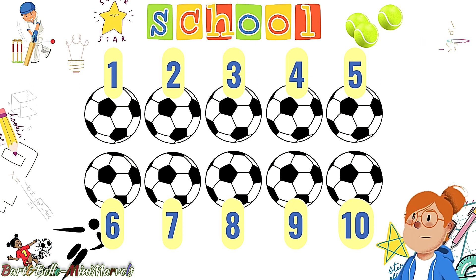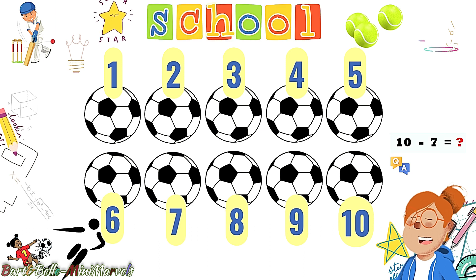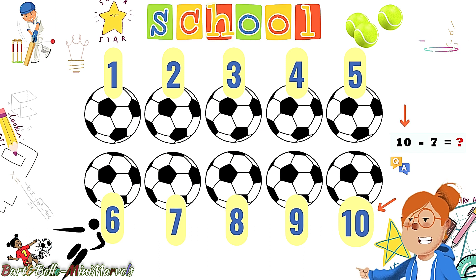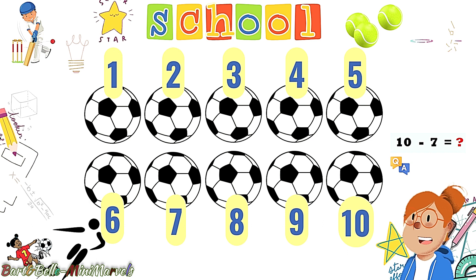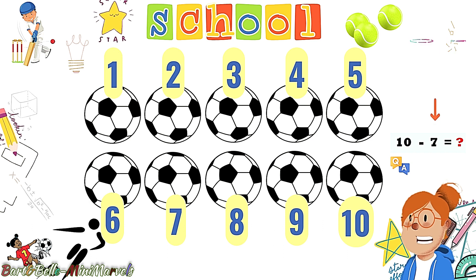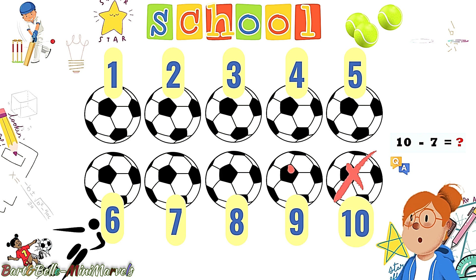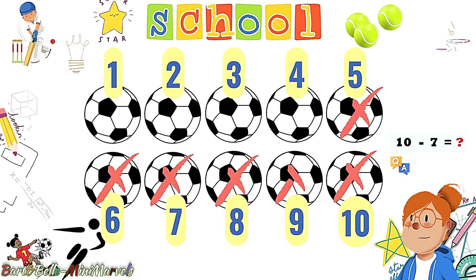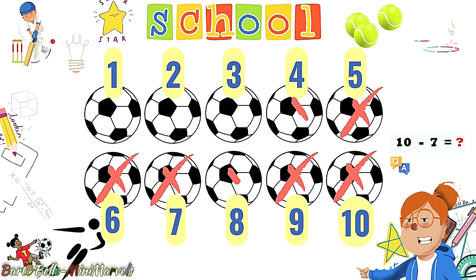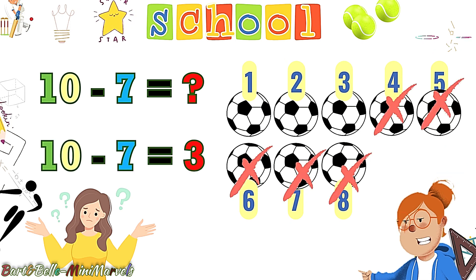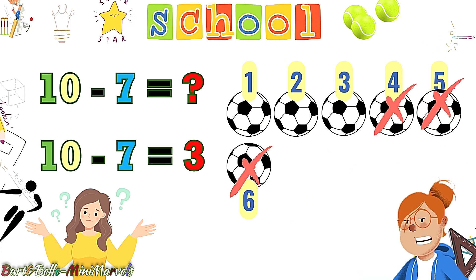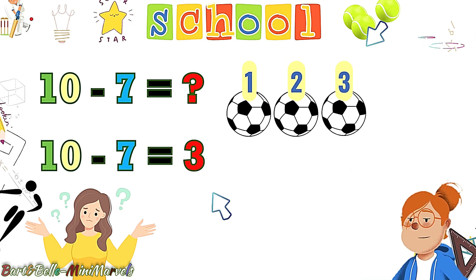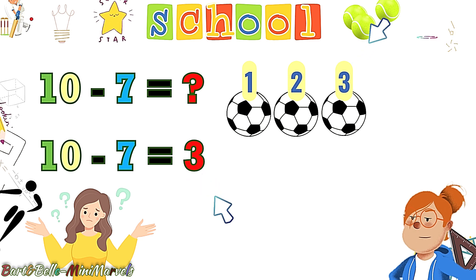To solve the question, let's put 10 footballs on the screen once more. The 10 from the question determines the total number of footballs, and this 7 is showing the number we have to kick away to get the answer. We will simply kick 7 footballs. Let's do this! Yes! This way. Now let's count the remaining footballs: 1, 2, and 3. We have solved another question.